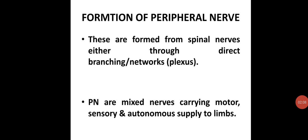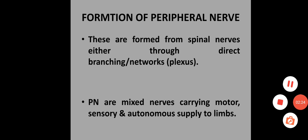The formation of a peripheral nerve: these are formed from the spinal nerves, either through direct branching or through networks known as plexus. The peripheral nerves are mixed nerves, carrying motor, sensory, and autonomic supply to the limbs.